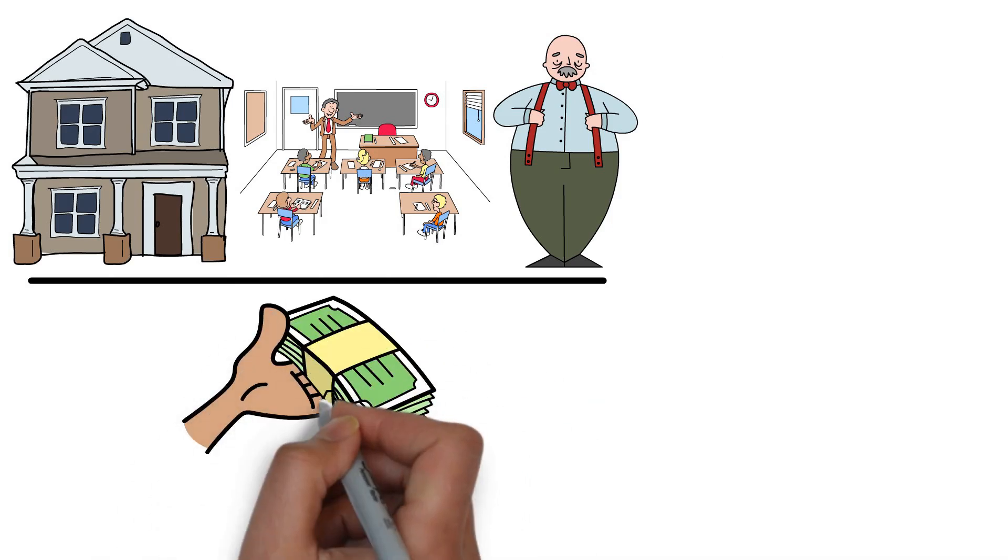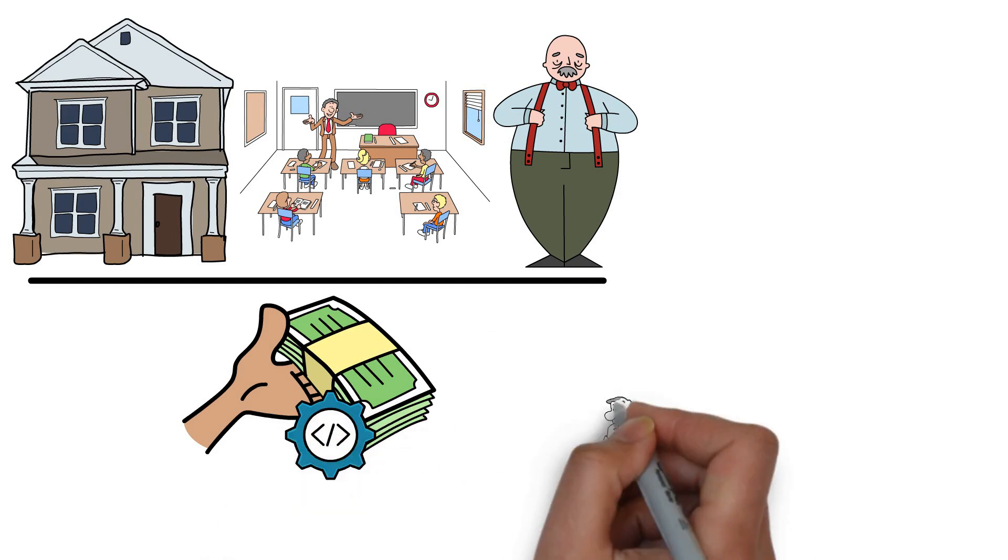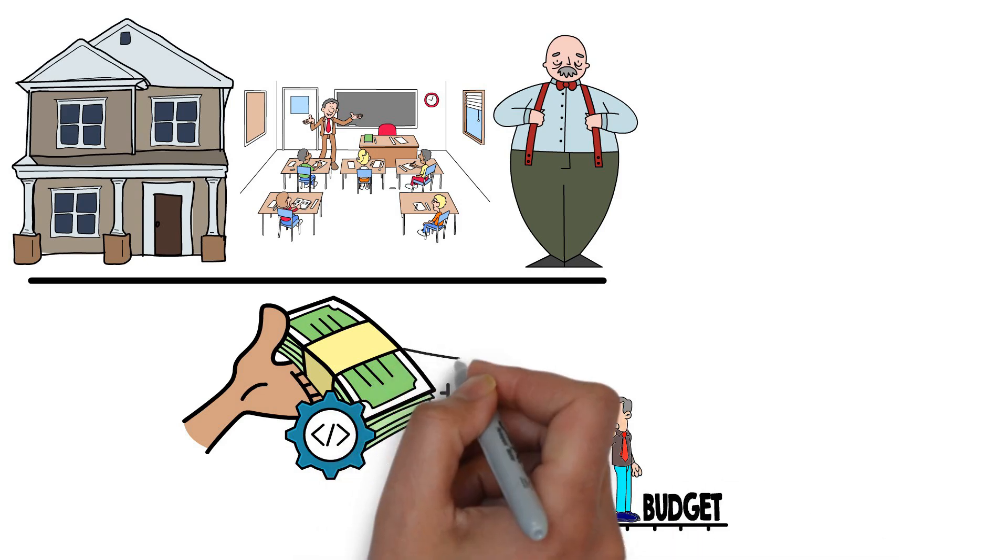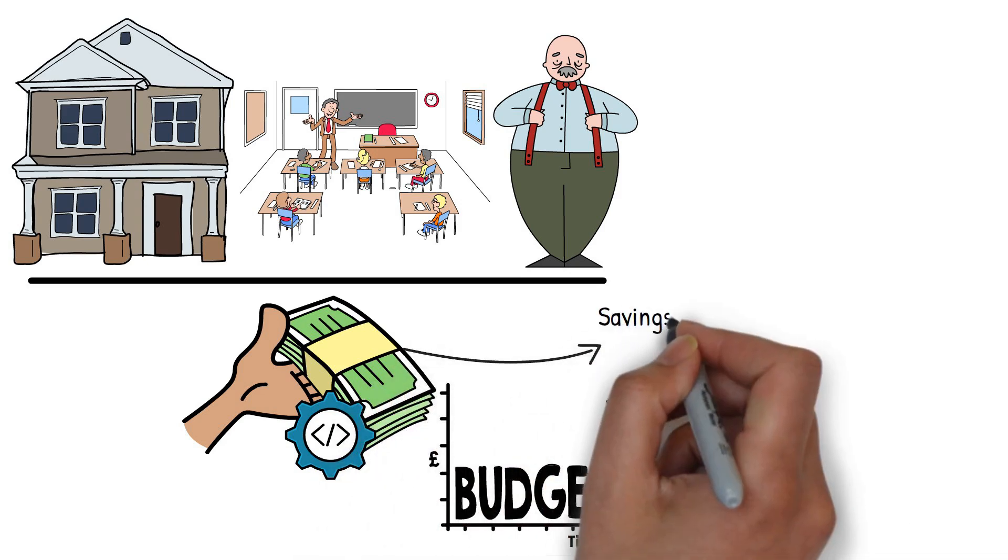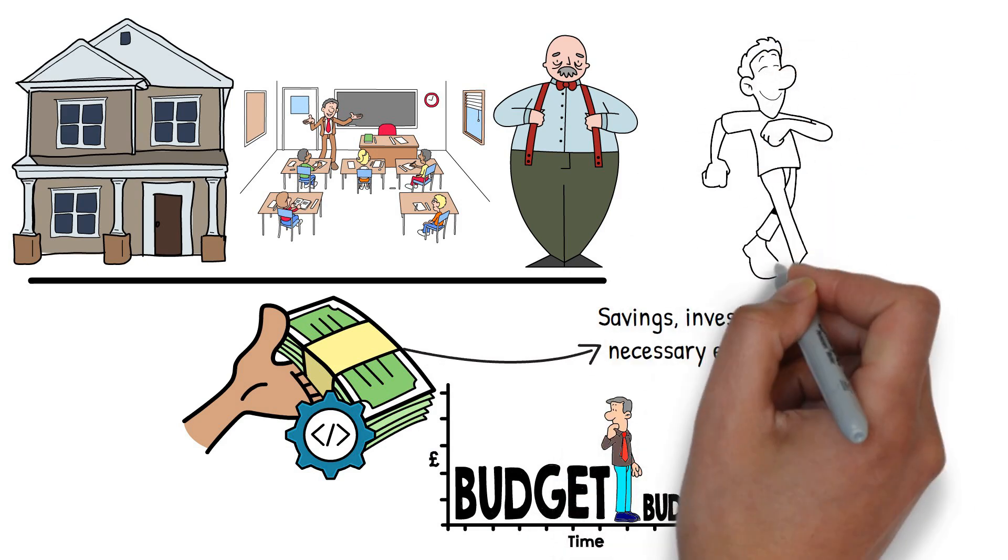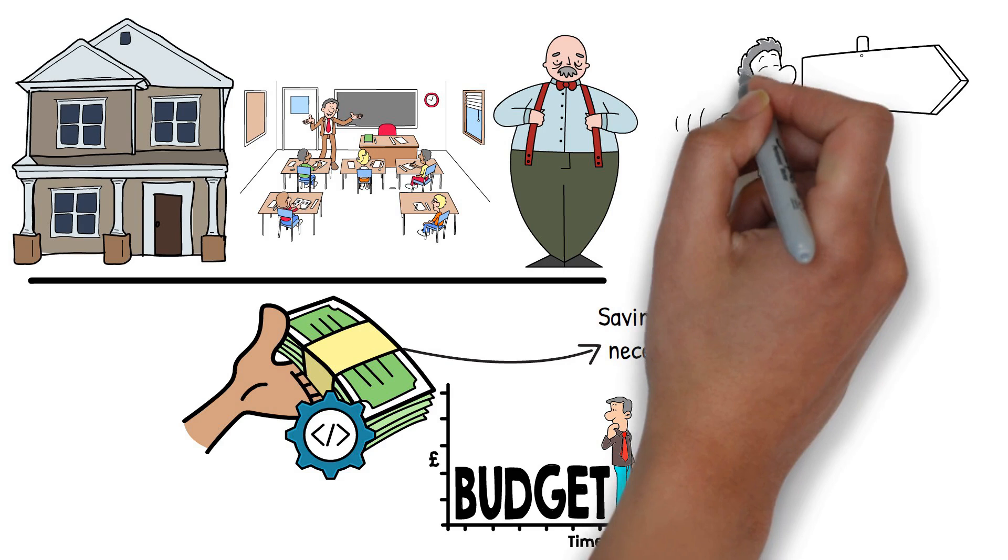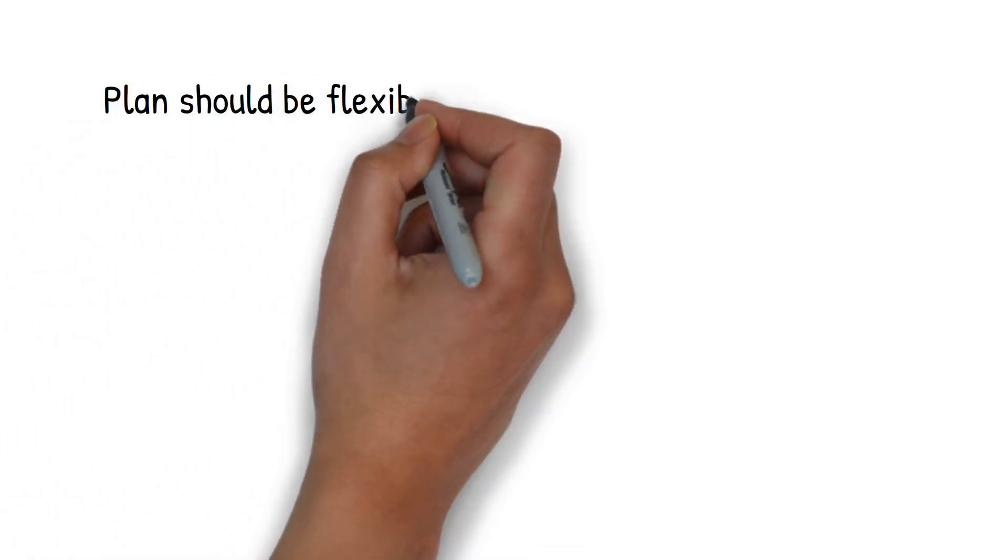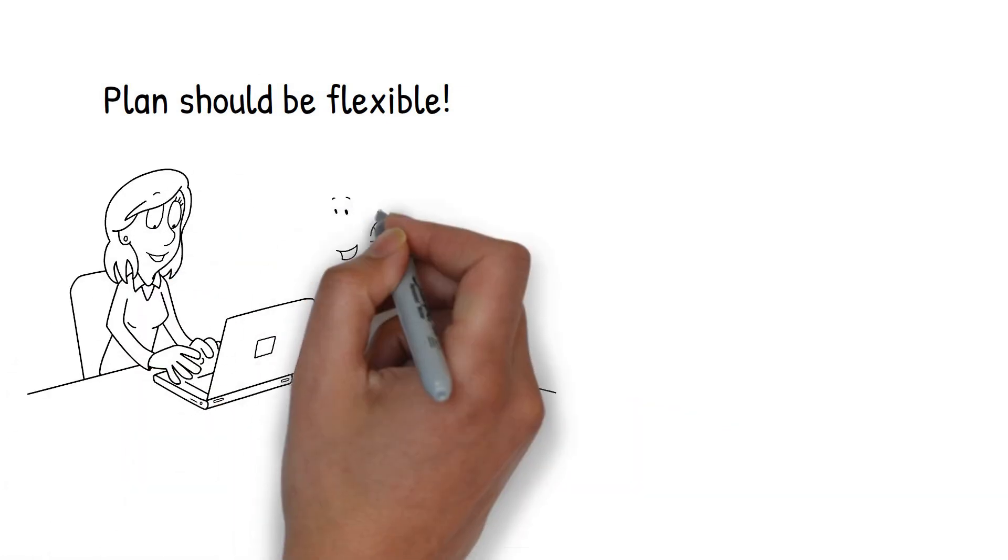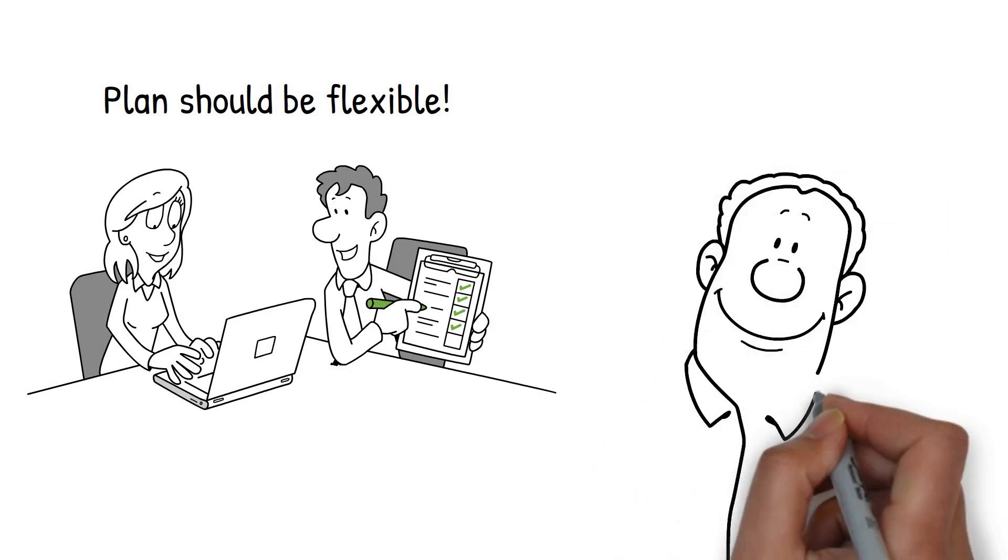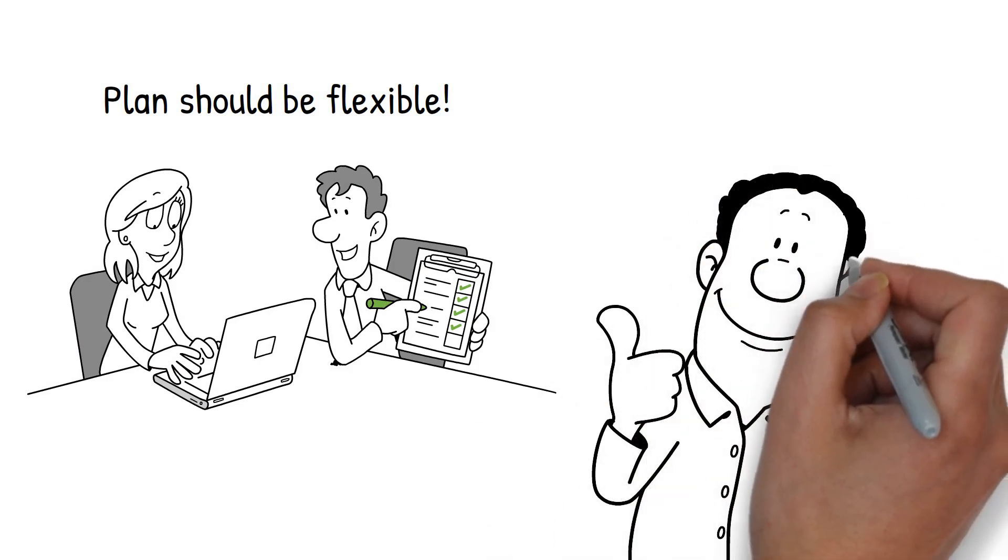Next, consider how you intend to use the money from your income to achieve these goals. It's not just about earning money, it's about managing it wisely. Create a budget that aligns with your goals. Allocate a portion of your income to savings, investments, and necessary expenses. Make sure your spending habits reflect your priorities and help you move closer to your goals. Remember, your plan should be flexible. Life changes, and so do your goals and circumstances. Review your plan regularly and make adjustments as needed. This ensures that your plan remains relevant and effective, helping you stay on track to achieve your goals.